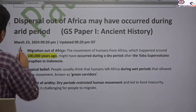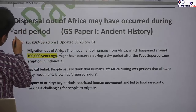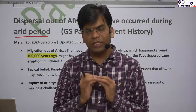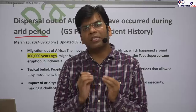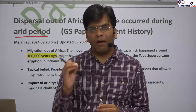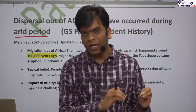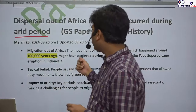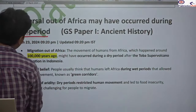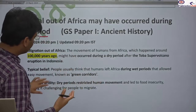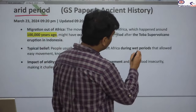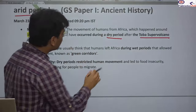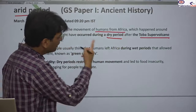New research suggests that the dispersal of humans out of Africa may have occurred during the arid period — not the wet and humid period as previously thought. Humans are considered to have originated from Africa and were confined there for a long period. As there was a gradual increase in volcanic eruptions and an increase in the arid period — particularly due to the Toba supervolcano eruption — humans came out of Africa. During this dry and arid period, approximately 80,000–90,000 years ago, humans began dispersing from Africa to other parts of the world.